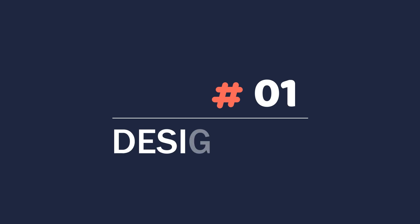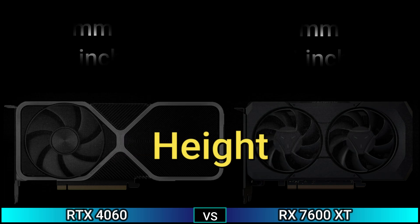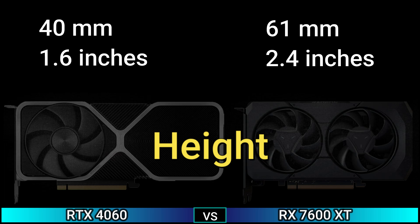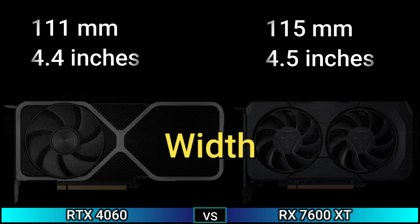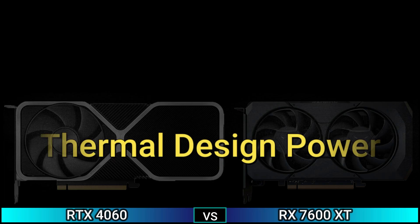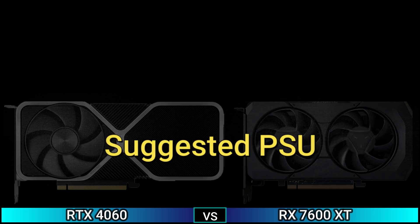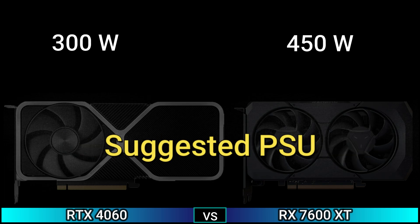Firstly, design: dual slot. Height: 1.6 inch and 2.4 inch. Width: 4.4 inch and 4.5 inch. Length: 9.4 inch and 8 inch. Thermal design power: 115 watt and 190 watt. Suggested PSU: 300 watt and 450 watt.